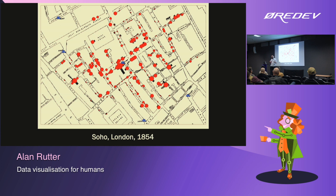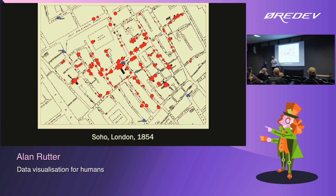When he walked the streets and looked at what was at the center of that map, he realized it was a water pump — the pump the people of Soho used for cooking, cleaning, and drinking water. He was able to say: maybe cholera has something to do with the water. Crucially, he used this visualization to convince people in authority to look at the water supply. That led to huge investments in sanitation, clean water, and sewerage, and gradually cholera was eliminated as a pandemic. This is what we're trying to do with data visualization: turn raw data into something highly visual that we can understand quickly and take decisions from.